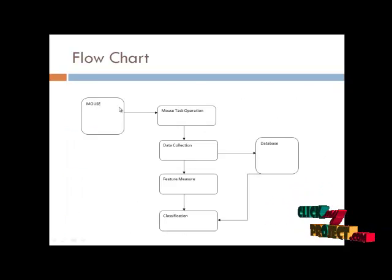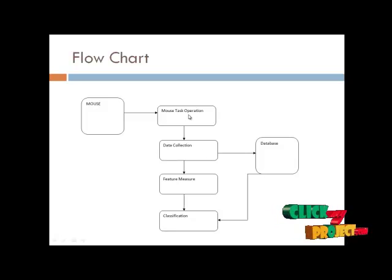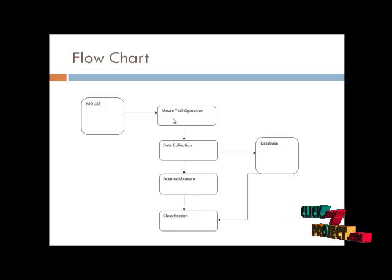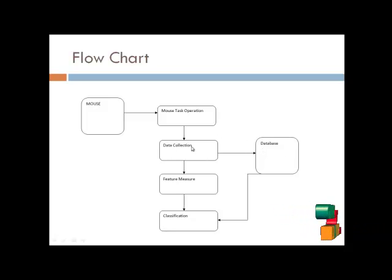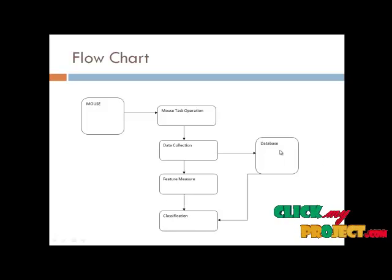Let us see the flow diagram. The most dynamic data comes from the task operation. The task operation generates data collected into the database. There are two features added: the feature measurement calculates whether the task is a single click, double click, right click, or left click. This collected information goes to the database. The retrieved information undergoes feature measurement — holistic and procedural — and the measured values are sent to classification, with classification results shown from the database.